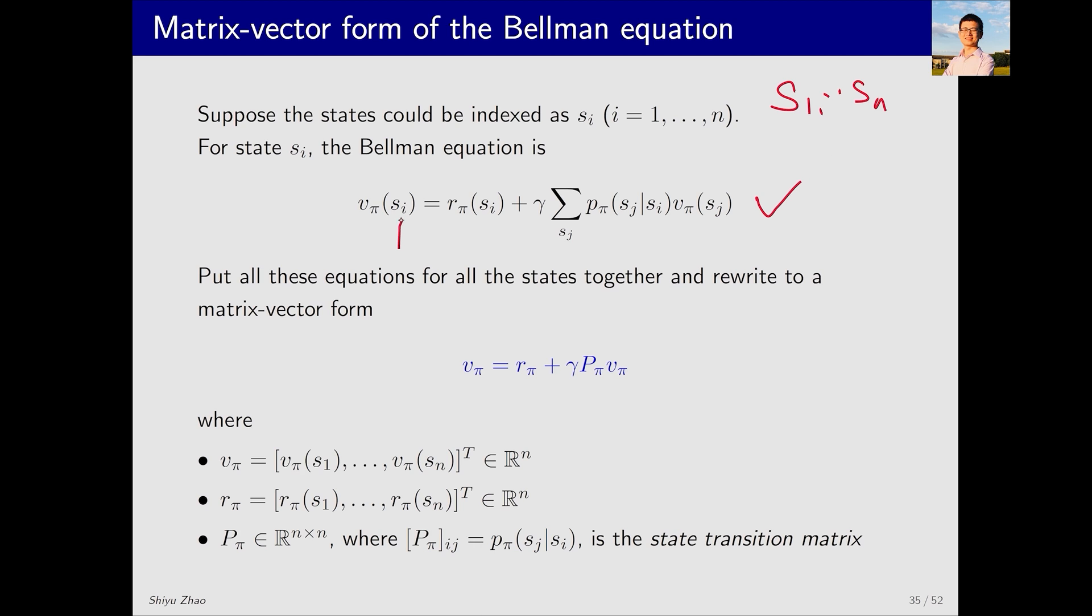The state value of s_i equals the first term, which is the average immediate reward, followed by the probability of jumping from s_i to s_j, and the state value v_π(s_j). Transforming this equation into a matrix vector form is simple. Here, v_π is a vector, which is represented as follows: v_π equals from v_π(s1) to v_π(s_n). Similarly, r_π is also a vector, represented in this form.